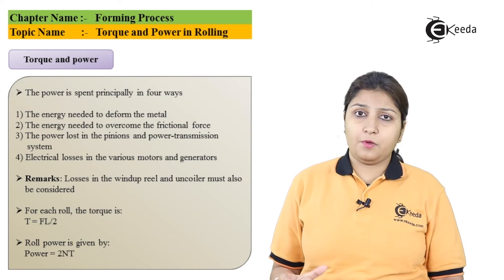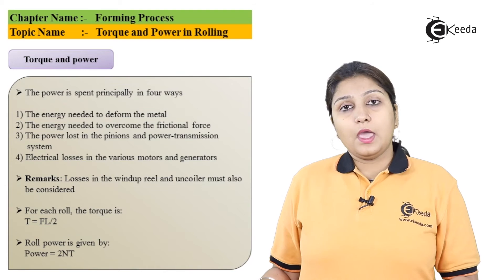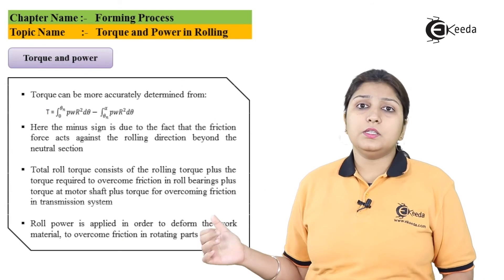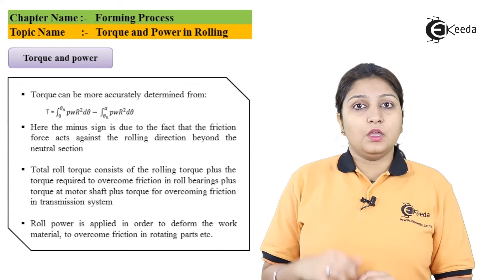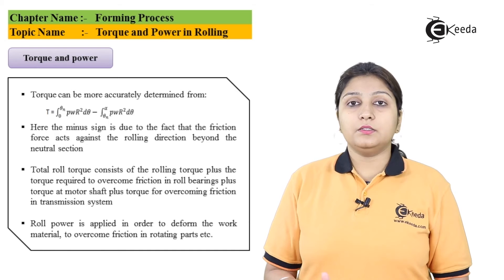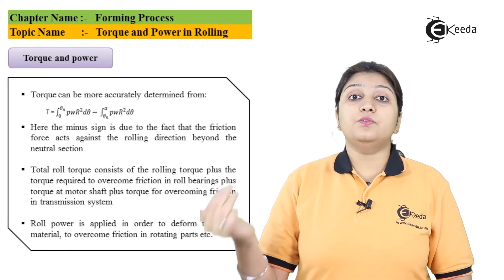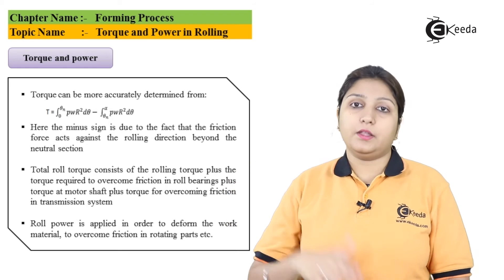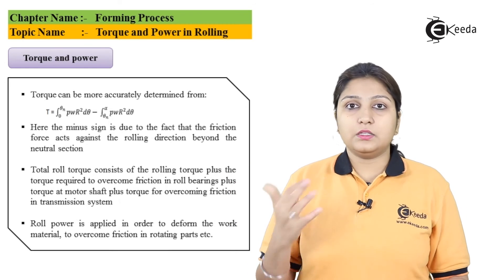The basic formula of torque is FL by 2, and when you talk about power, it is 2πNT. This is another formula of torque which has a minus sign in between. Basically, the minus sign indicates the forces against friction. Friction is acting in a particular direction and force comes in another direction, so the minus sign is included.